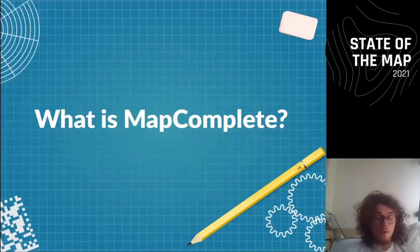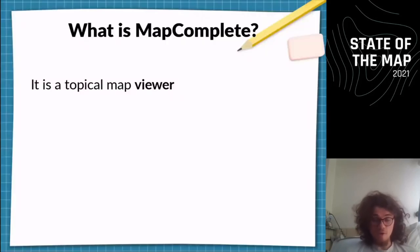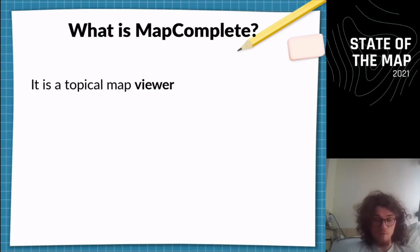I don't think everyone is familiar with MapComplete, so a very brief introduction. MapComplete is three things. First of all, it's a topical map viewer — a map viewer where certain points of interest are shown which are interesting for a small group of people. It can be very topical, for example, cyclists, or climbing, or people who like trees.